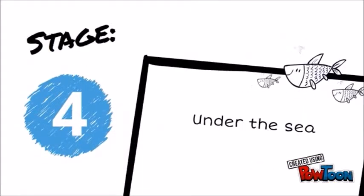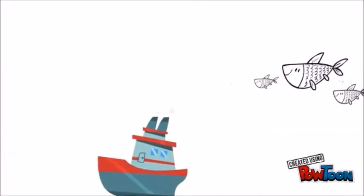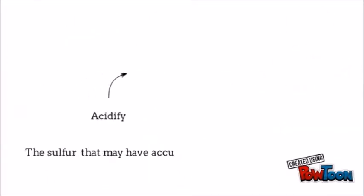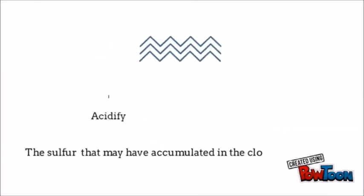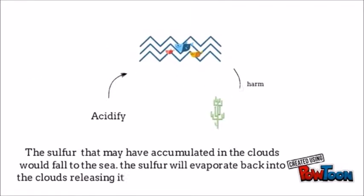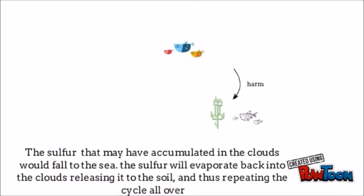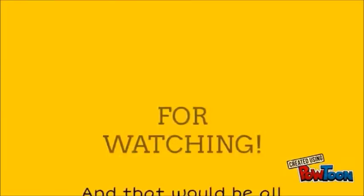Stage 4 is Under the Sea. The Sulphur particles that may have accumulated in the clouds fall to the sea. The Sulphur will evaporate back into the clouds, releasing it to the atmosphere, and thus repeating the cycle all over.